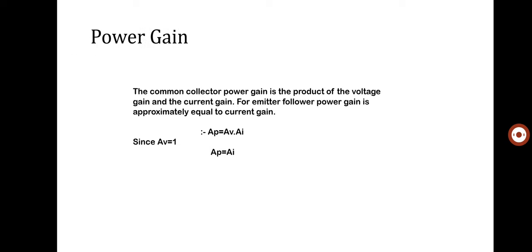Moving to power gain: the common collector power gain is the product of voltage gain and current gain. For the emitter follower, power gain is approximately equal to current gain, because the voltage gain is approximately equal to one in the common collector amplifier. Therefore, power gain equals current gain.